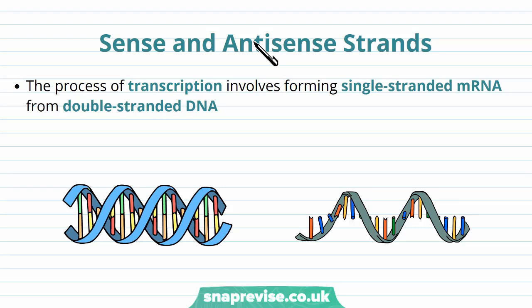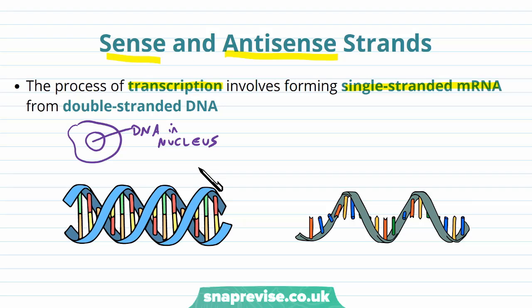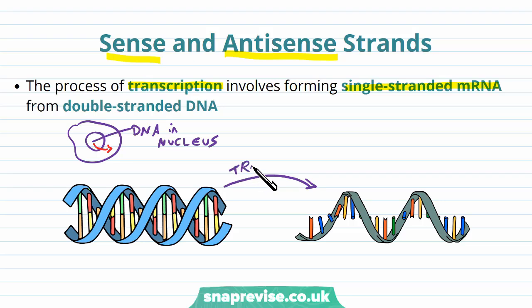Before we get on to the actual process of transcription, we need to be aware of what we mean by sense strands and anti-sense strands. The process of transcription is where we take the information stored in DNA and send it out of the nucleus in the form of a single-stranded mRNA molecule. The DNA and chromosomes are too large to fit out of the nucleus, so they have to send a message out with their information instead — it's an indirect communication. Transcription is where the information on DNA is put into a molecule of mRNA.